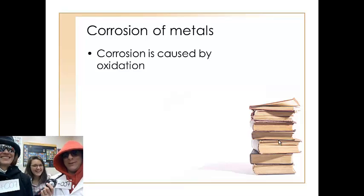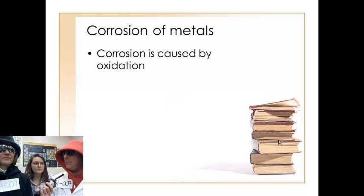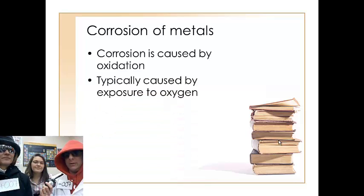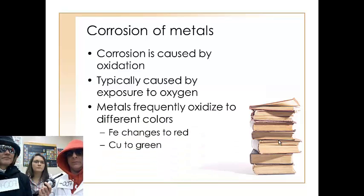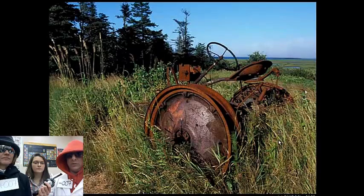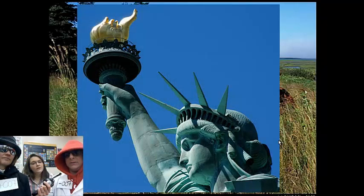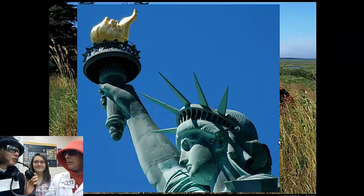Corrosion is caused by oxidation. When metals corrode — whether it's the fenders on your car because of rusting — that's oxidation. It's typically caused by exposure to oxygen. Oxygen is a great electron gainer, which makes it an oxidizing agent, and you can see that happen in iron rusting or copper oxidizing. When iron rusts, it changes colors and creates that typical orange rust. When copper rusts or oxidizes, it makes that pale green patina that you see on the Statue of Liberty — I believe that is called verdigris.